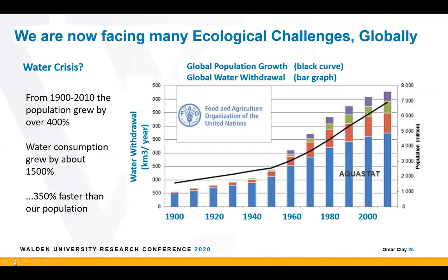Now a science literacy aside with regards to global security issues — starting with the water crisis. Many may not realize we have a global water crisis. The human population curve has gone up by 400% since 1900, but water consumption has grown by about 1,500% — 350% faster than our population. So not only are there many more of us consuming water, but we're consuming much more water per capita than we were in 1900.